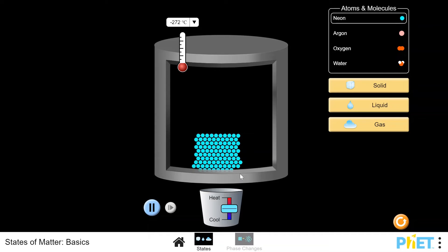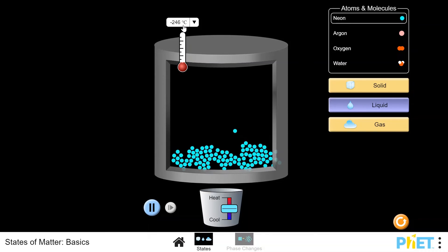Heating up the atoms gives more energy to the atoms, and they vibrate more. There is an increase in temperature with the addition of heat to the system. If you keep heating, neon melts and becomes a liquid at negative 246 degrees Celsius.